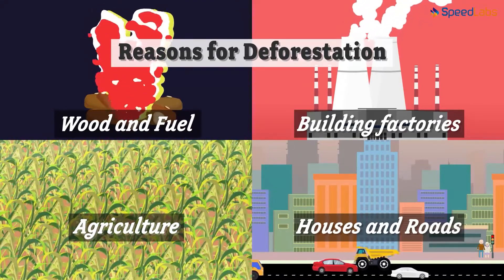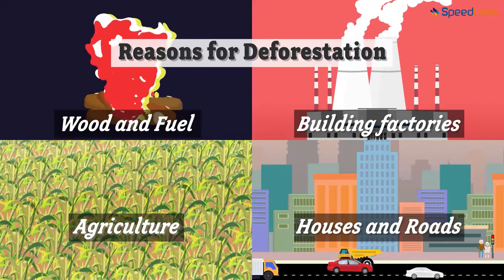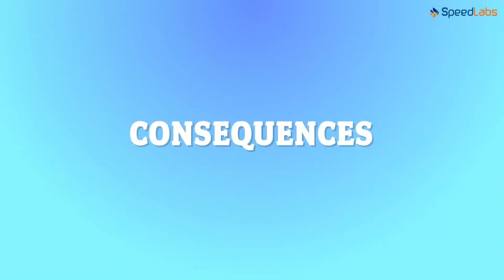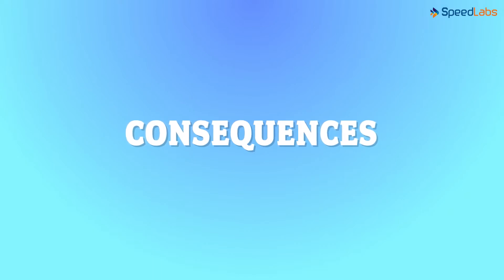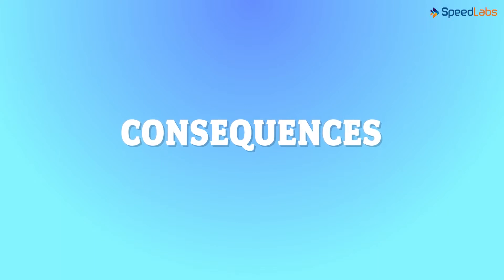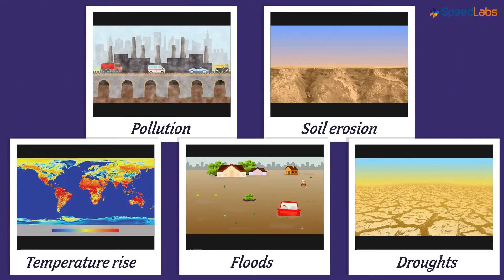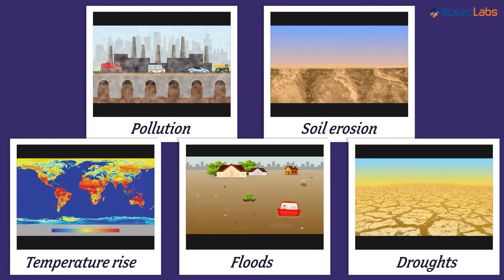Man has cut trees over the years, and do you know this very action has caused some serious reactions? We call them consequences. We cannot get away by reducing the green cover on our planet. Trees and plants are part of an ecological chain and they maintain a specific balance. Let us see how many deforestation consequences you are able to identify from the following pictures.